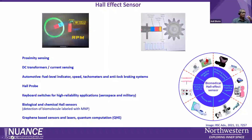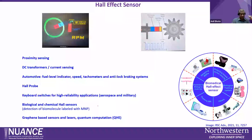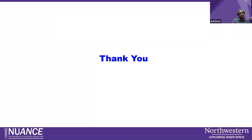Applications of Hall sensors include proximity sensing, current sensing, and automotive industries such as fuel level indicators, speed tachometers, and anti-lock braking systems. Calibrated Hall probes can be used to measure magnetic fields, and sensors can be used for keyboard switches. There are also recent papers on biological and chemical Hall sensors, labeling biomolecules with magnetic nanoparticles for detection. For quantum Hall effect, it can be used for graphene-based sensors, lasers, and possibly in the future for quantum computation.